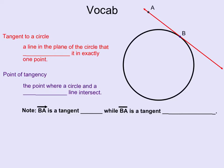Let's look at some vocabulary here. Tangent to a circle: a line in the plane of the circle that touches it in exactly one point. The point of tangency is the point where the circle and the tangent line intersect.